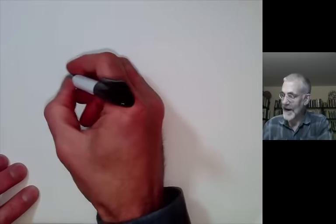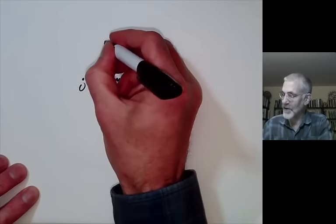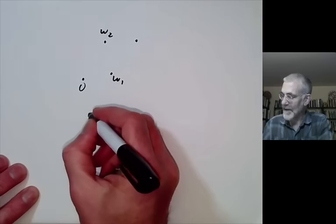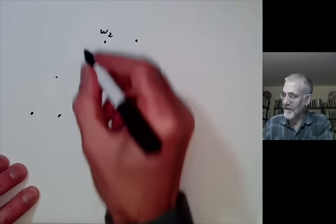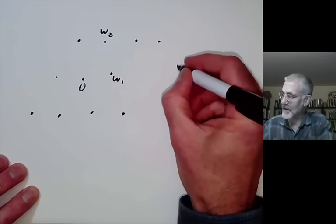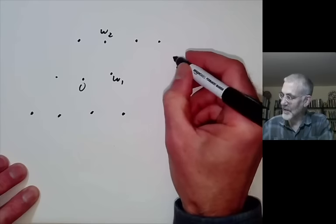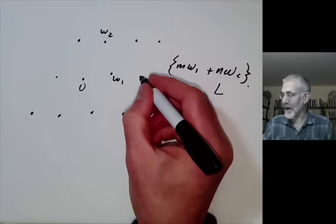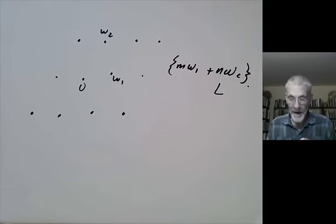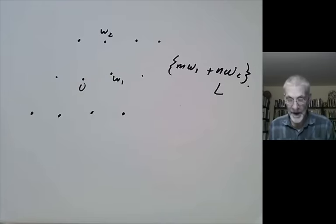So the periods form a sort of lattice. If you take zero here, ω₁ might be one complex number and ω₂ another, and then all integral multiples — m·ω₁ + n·ω₂ — form a lattice, which I'll denote by L. So we get a grid in the plane, and the elliptic function is the same if you shift by any one of these lattice points.